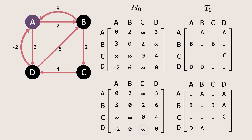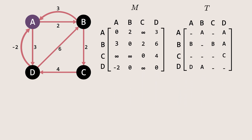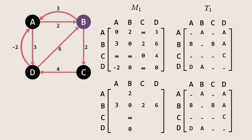Now the first iteration is finished. Let's name this new updated matrix as M1, and the updated predecessor matrix as T1. In the next iterations, we will check if we can reduce the costs further by going through other nodes. Since we've already checked node A, let's now see whether we can get shorter paths via node B. Just like the previous iteration, we will not be updating the rows and column of B, as they already represent the direct connections. Also, we will not check the diagonal element, since our example graph does not have negative weight cycles.